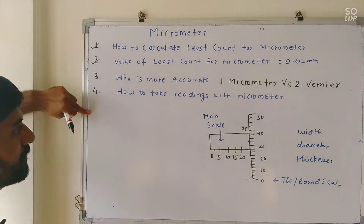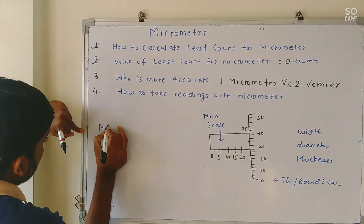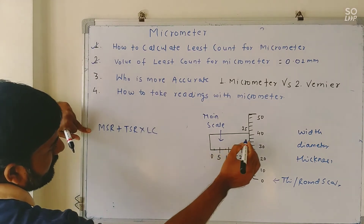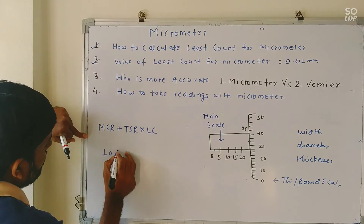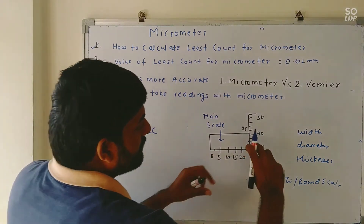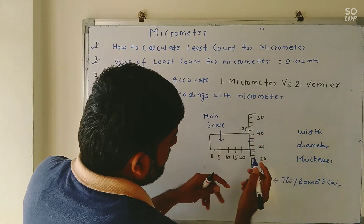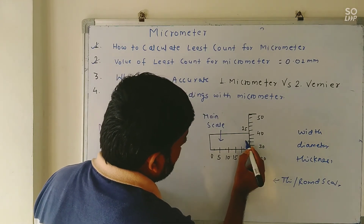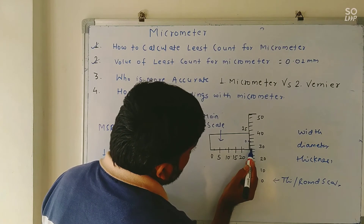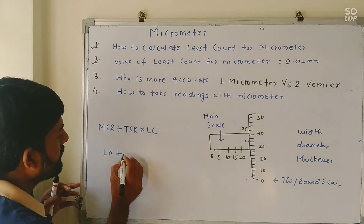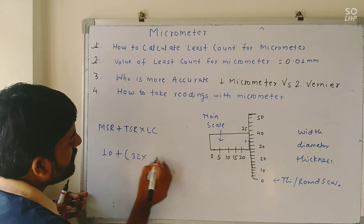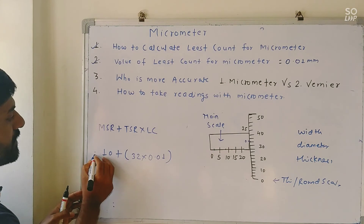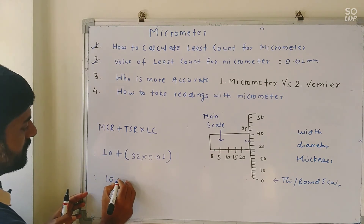How to take a reading with the micrometer: the formula is main scale reading plus thimble scale reading multiplied by least count. Suppose main scale reading is 10. We move the thimble clockwise or anti-clockwise and see which point touches the zero line. Suppose the thimble scale reading is 32. Then: 10 plus 32 into 0.01 mm equals 10.32 mm.